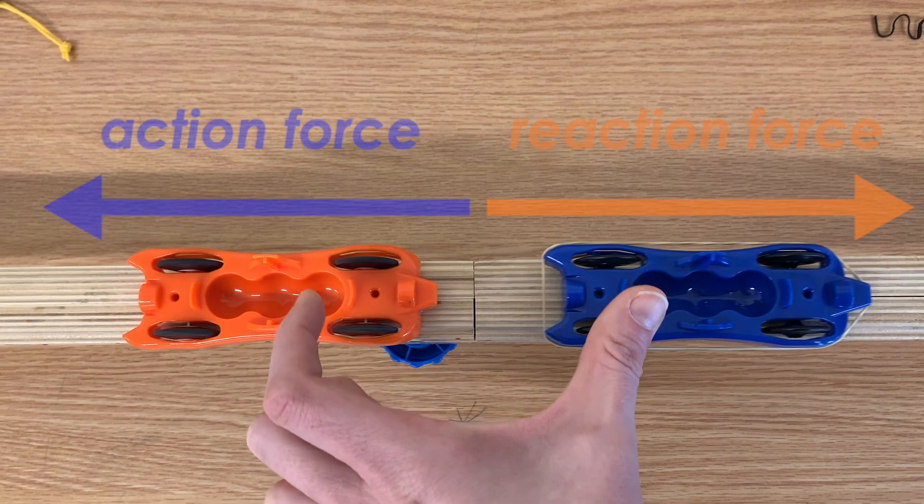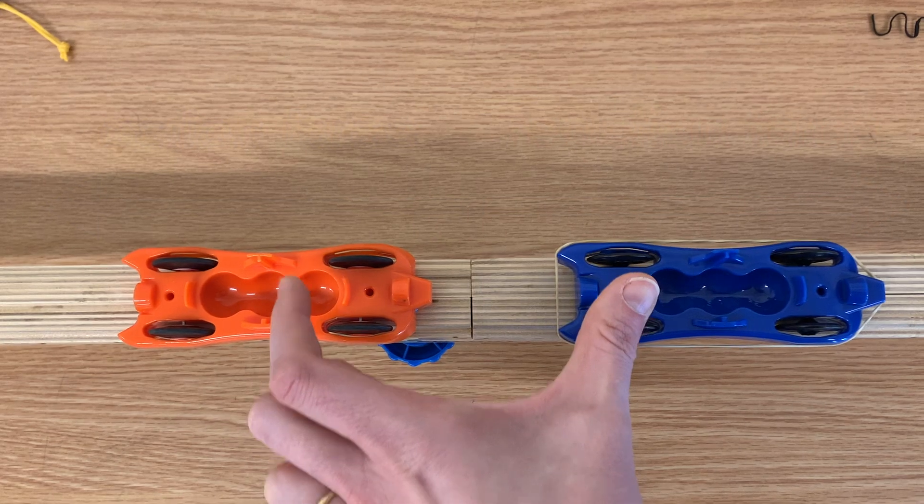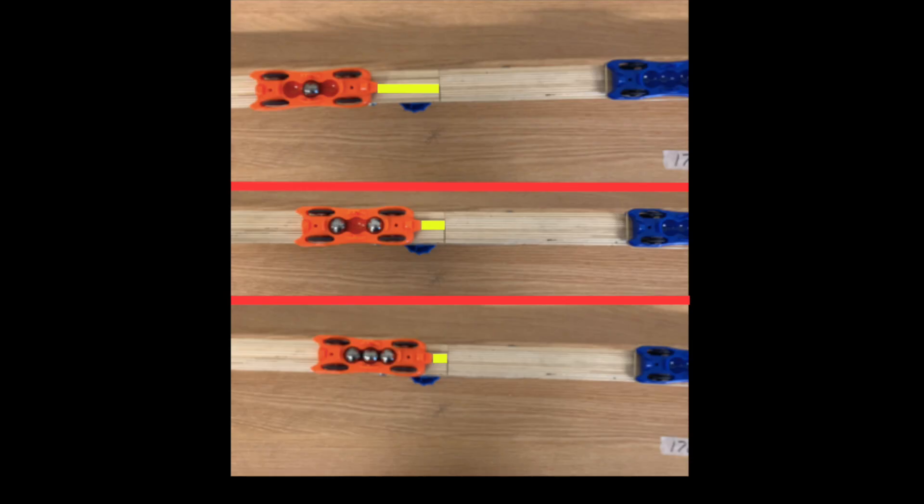When the cars had equal masses, they accelerated the same amount. But when one car became more massive, it responded to that same force with less acceleration.